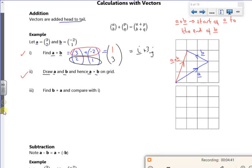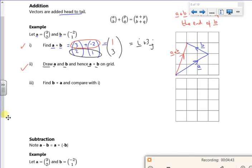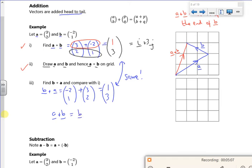Now it says find b plus a. So b plus a will be minus 2, 1 plus 3, 2. So that's going to be 1, 3. So if you notice, that's the same, isn't it? So a plus b is the same as b plus a.